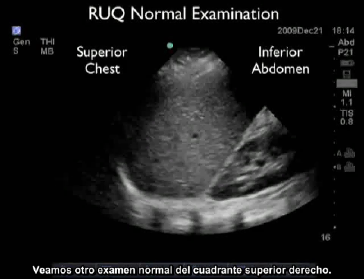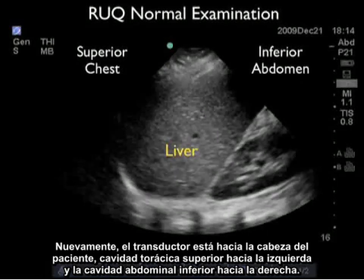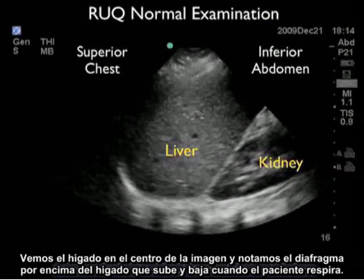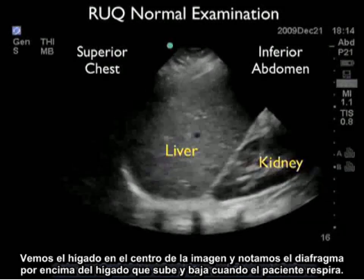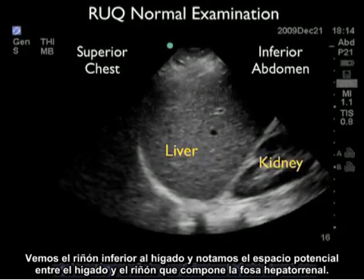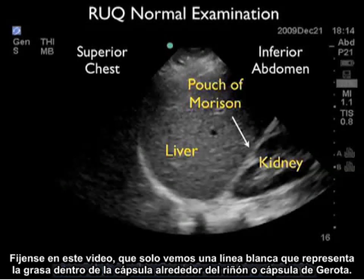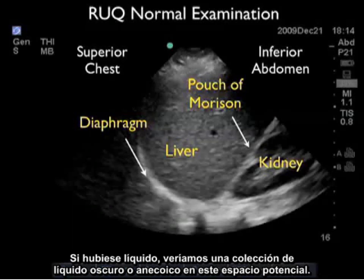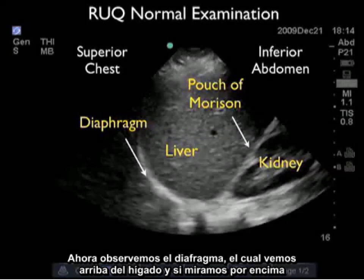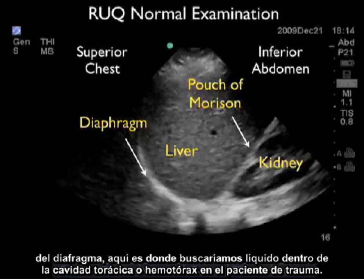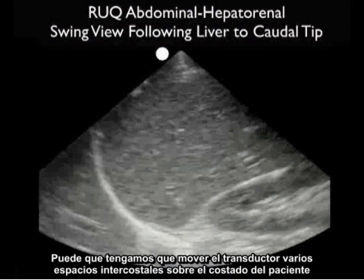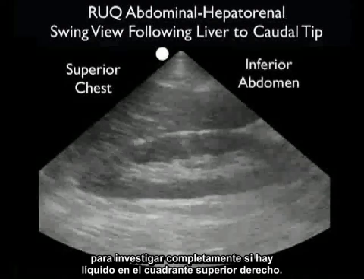Let's take a look at another normal right upper quadrant examination. Again, the probe marker is towards the patient's head, superior chest cavity towards the left, inferior abdominal cavity towards the right. We see the liver in the middle of the image, and notice the diaphragm above the liver moving up and down as the patient breathes. We see the kidney inferior to the liver, and notice the potential space in between that makes up the hepatorenal fossa, or pouch of Morrison. All we see is a white line representing the fat within Gerota's capsule. If there was fluid, we would see a dark or anechoic fluid collection in this potential space. Above the diaphragm is where we would look for fluid within the chest cavity, or hemothorax, in the trauma patient. We may need to move the probe several intercostal spaces on the patient's side to fully investigate the right upper quadrant for fluid.